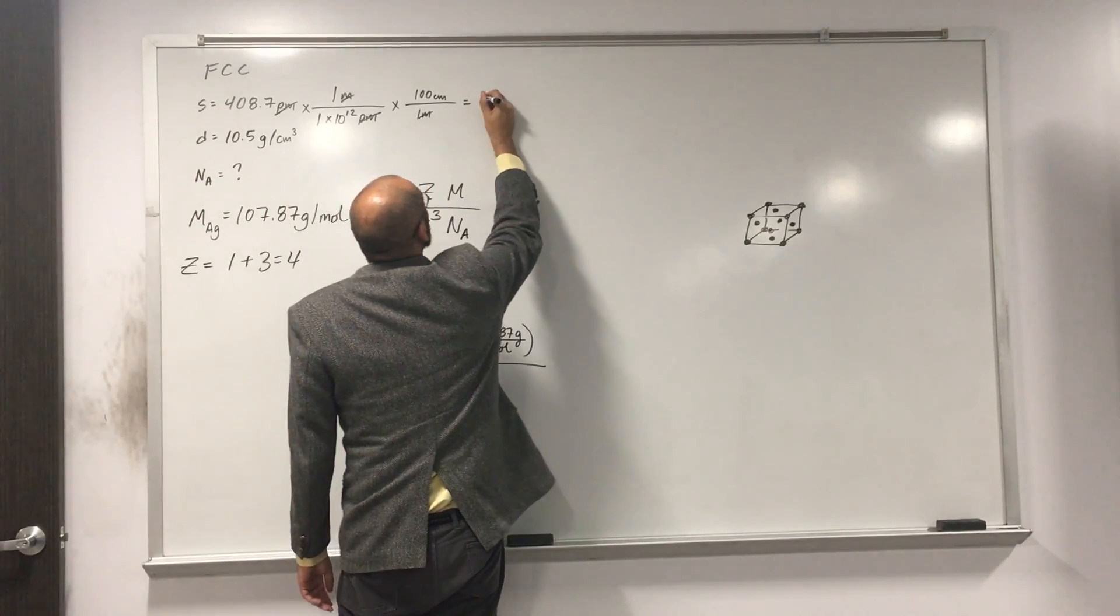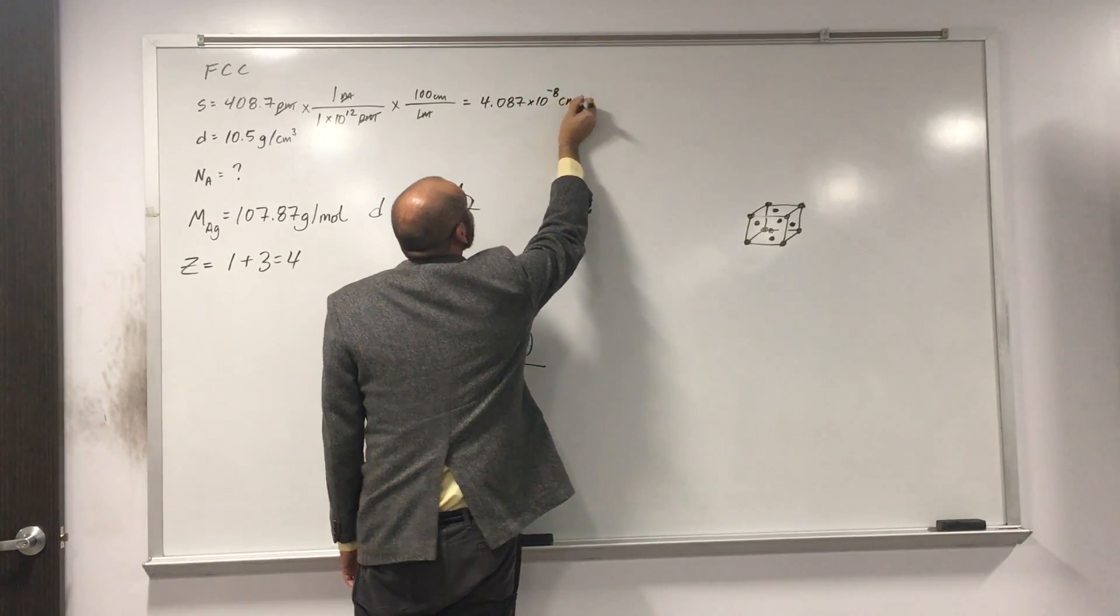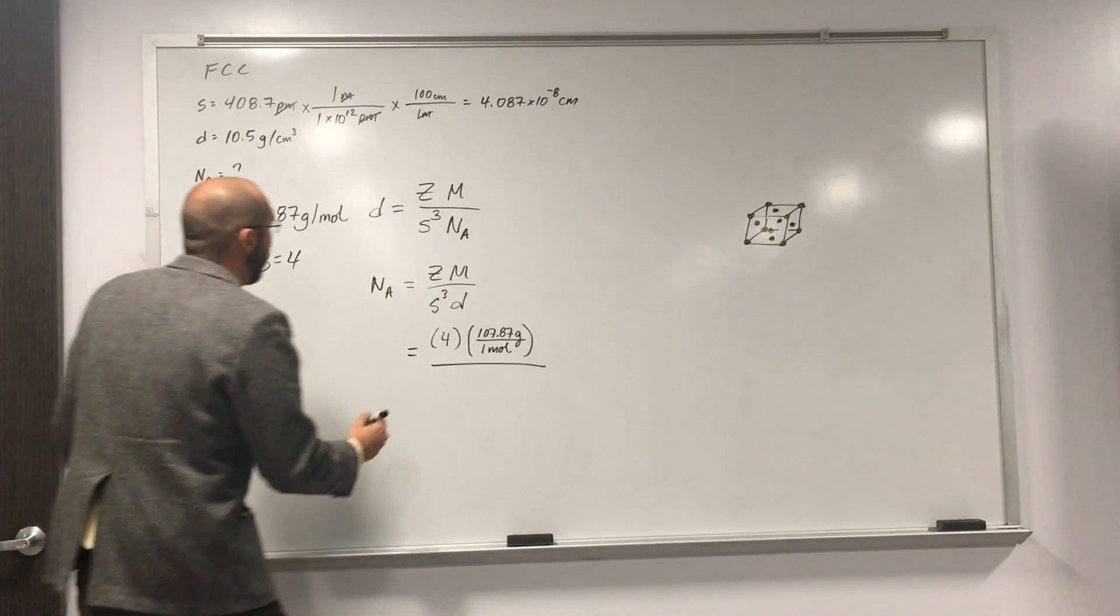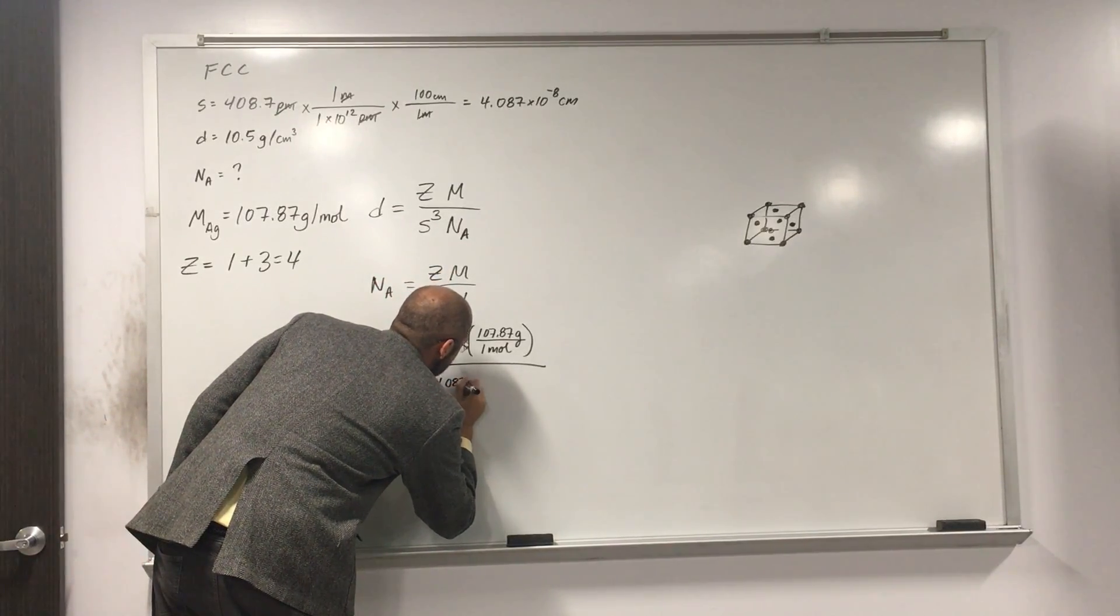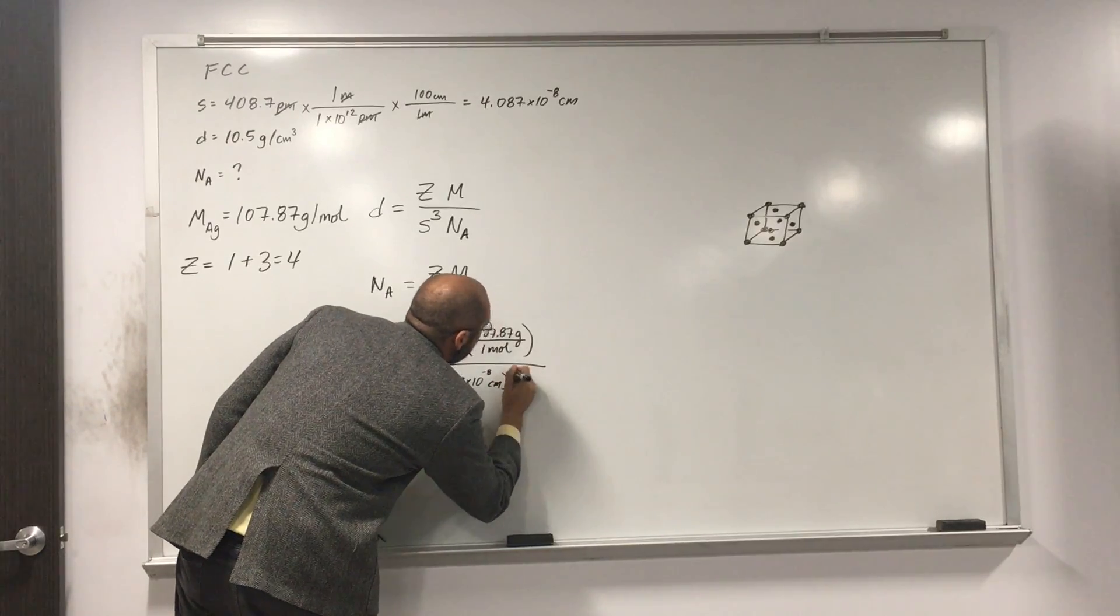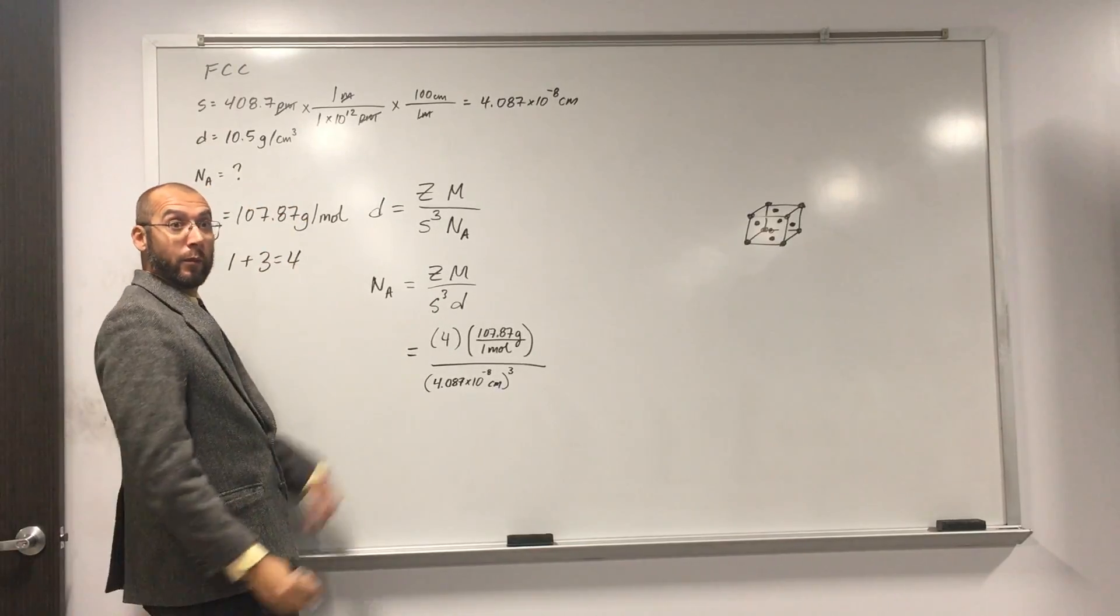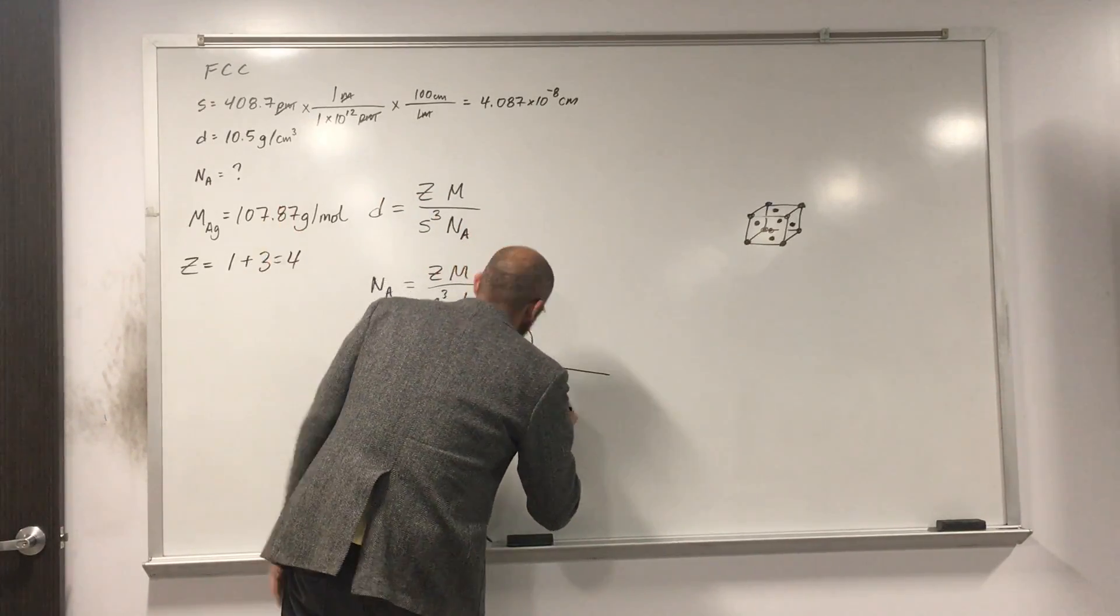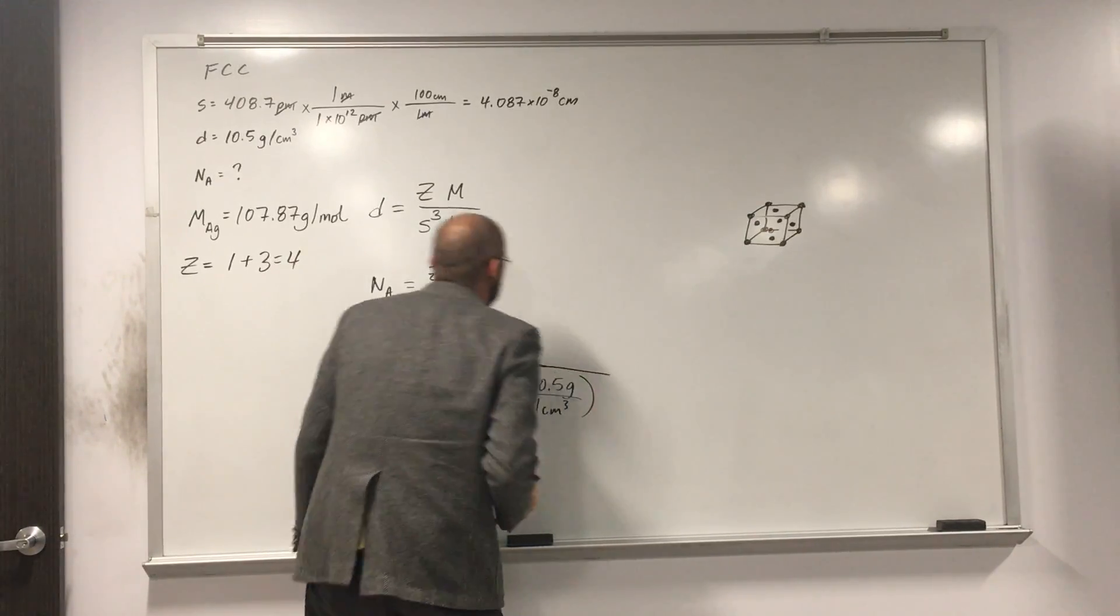So one times 10 to the 12 picometers per one meter. I'm just going all the way up. Then we can come back down to centimeters. So one meter, 100 centimeters. So we got that in centimeters. If we do that, that's 4.087 times 10 to the negative eight centimeters. But we're going to cube that, right?